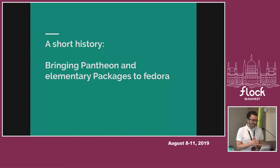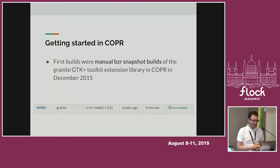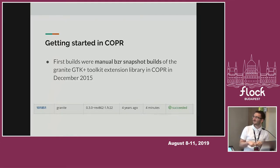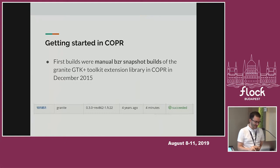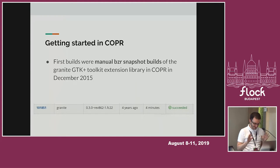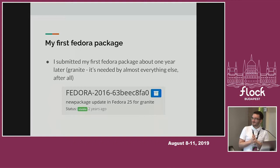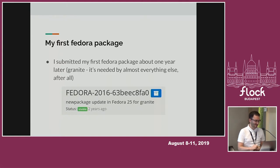A short history of how this came to be. The first thing I did was build some manual Bazaar snapshot builds of the Granite GTK+ toolkit extension library in Copr, and that was in 2015 — almost four years ago. I started with Granite because almost every other elementary package depends on it, so that seemed like a good starting point. Bazaar snapshots are not nice because Bazaar is terrible, and elementary used Launchpad at the beginning, and Launchpad is also terrible, but that's another topic.